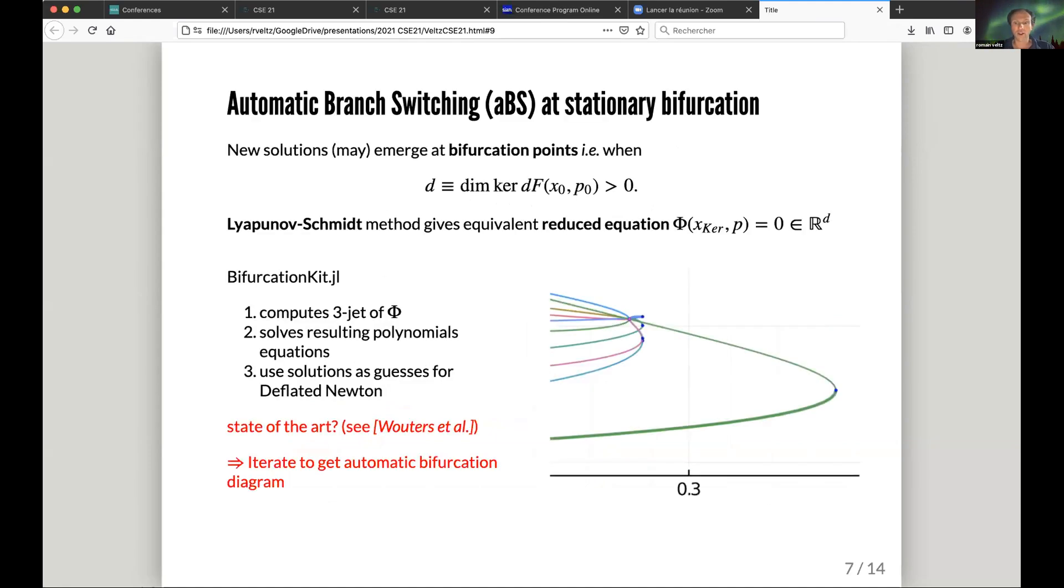To do that, I have to show you how to do automatic branch switching at a bifurcation point. A bifurcation point, very loosely speaking, is a point at which the kernel of the Jacobian is not zero, and solutions may emerge at bifurcation points. Once we have located one, for example using bisection, like on this green curve you have a bifurcation here.